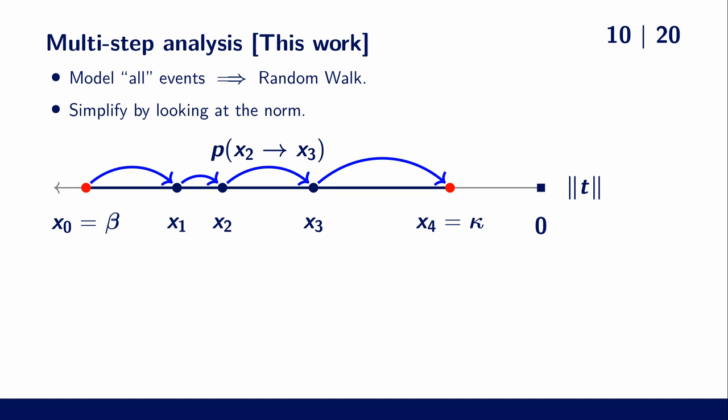Taking the product of these transition probabilities gives us the probability that the iterative slicer reaches kappa via this specific path. And of course, this would give a lower bound on the total success probability.